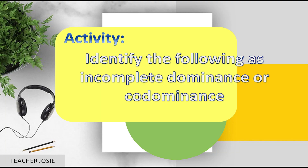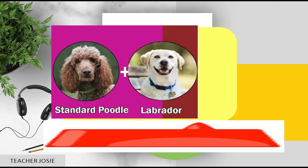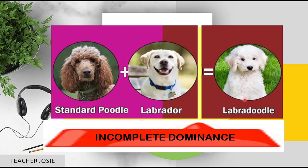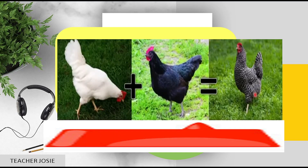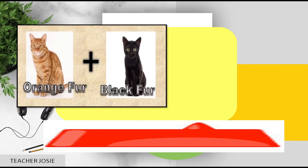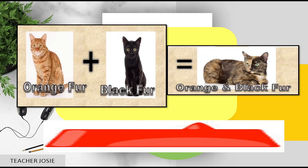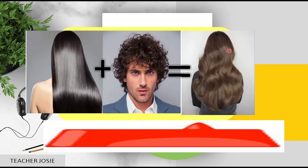Let's have an activity — identify the following as incomplete dominance or codominance. A standard poodle crossed with a Labrador results in a Labradoodle: that is incomplete dominance. A white chicken crossed with a black chicken results in a checkered pattern: that is codominance. An orange fur cat crossed with a black fur cat results in orange and black fur: that is codominance. A straight hair crossed with a curly hair results in wavy hair: that is incomplete dominance.